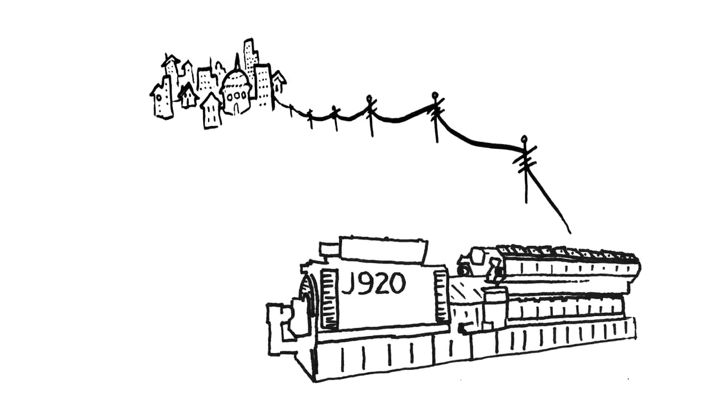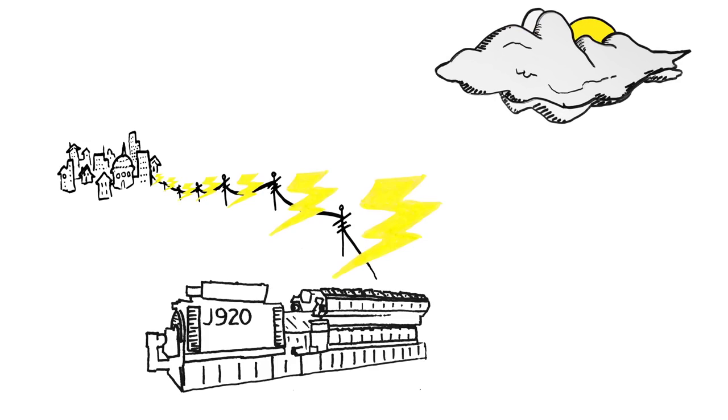The new system allows us to start up the J920 Flexstra quickly, which means the town will never lose power, even when the sun goes behind a cloud.